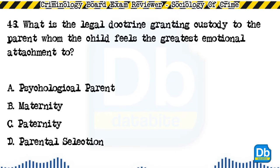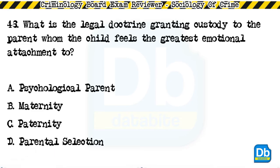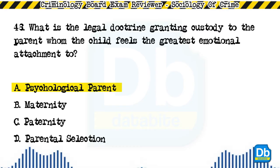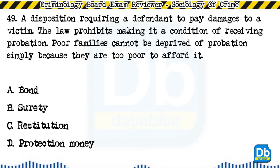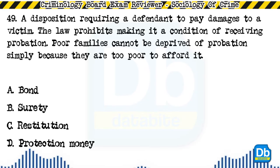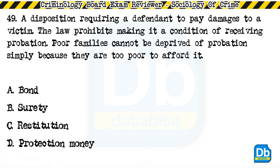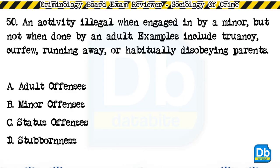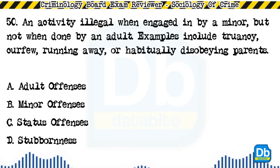The answer is D, protective custody. Question 48: What is the legal doctrine granting custody to the parent whom the child feels the greatest emotional attachment to? a) psychological parent, b) maternity, c) paternity, d) parental selection. The answer is A, psychological parent. Question 49: The disposition requiring a defendant to pay damages to a victim; the law prohibits making it a condition of receiving probation, so poor families cannot be deprived of probation simply because they cannot afford it: a) bond, b) surety, c) restitution, d) protection money. The answer is C, restitution. Question 50: An activity illegal when engaged in by a minor but not when done by an adult — examples include truancy, curfew, running away, or habitually disobeying parents: a) adult offenses, b) minor offenses, c) status offenses, d) stubbornness.